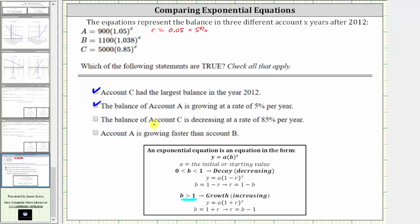Next, the balance of account C is decreasing at a rate of 85% per year. Well here we have C equals 5,000 times 0.85 raised to the power of x. Notice in this equation, the base B is between zero and one, and therefore we do have exponential decay, meaning as time increases, the value of the account is decreasing.